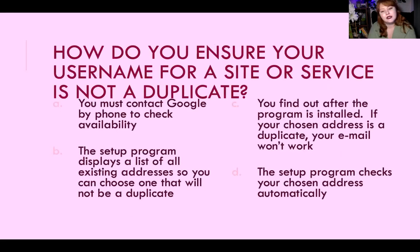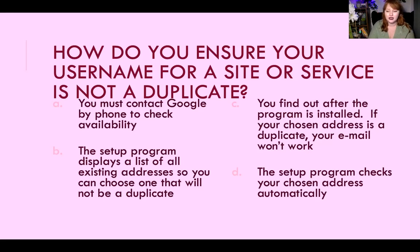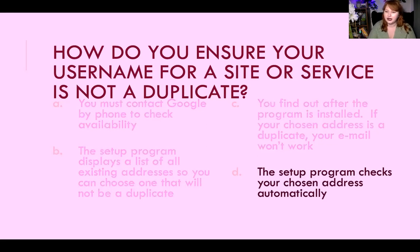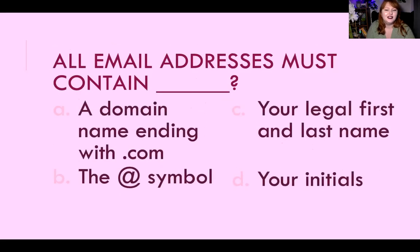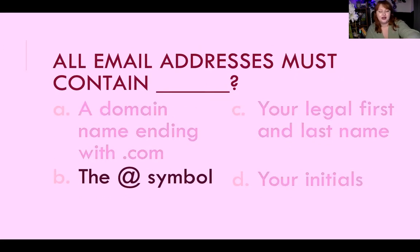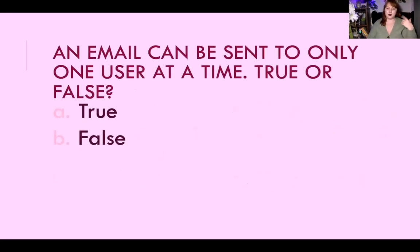How do you ensure your username for a site or service is not a duplicate? You don't have to do anything manually — you just put in the name you want and the setup program will tell you whether it's available. It checks automatically. All email addresses must contain the at symbol. The at symbol separates the domain and the person's name. Back in the day email was sent as your person's name at the computer you were using, but now it's all on domains using the DNS system.